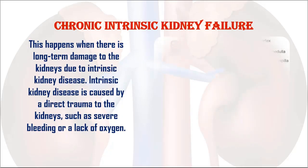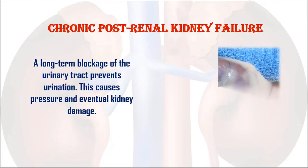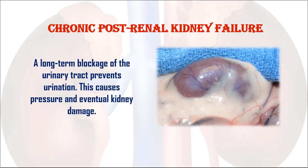4. Chronic intrinsic kidney failure. This happens when there is long-term damage to the kidneys due to intrinsic kidney disease. Intrinsic kidney disease is caused by a direct trauma to the kidneys, such as severe bleeding or a lack of oxygen. 5. Chronic post-renal kidney failure. A long-term blockage of the urinary tract prevents urination, causing pressure and eventual kidney damage.